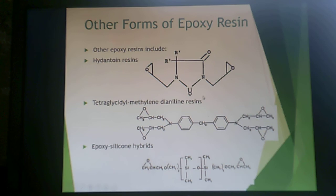A few other forms of epoxy resins include hydantoin resins and tetraglycidyl methylene dianiline, which contains four glycidyl groups on an aniline backbone, as well as epoxy-silicone hybrids with a silicone backbone capped with epoxy groups on the polysiloxane chain. This concludes the first of two epoxy resin lectures; viewers will answer a few questions before moving on to the next lecture.